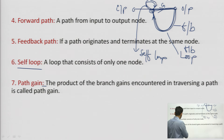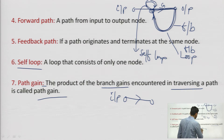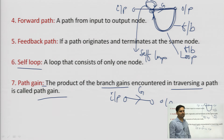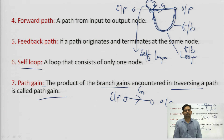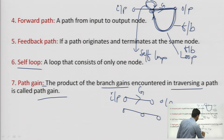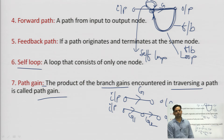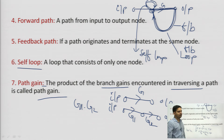Path gain: the product of branch gains encountered in traversing a path is called the path gain. If going from input to output I encounter branches with gain g1 and g2, the path gain is g1 · g2. Whatever gains are encountered from input to output, their product is the path gain.